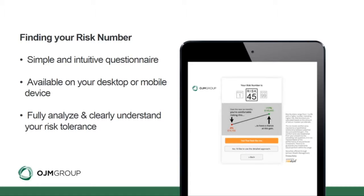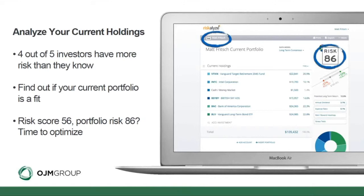We want to match your investments to your individualized risk number. On our 1-to-99 scale, we'll take you through a series of questions — typically about three to five minutes — available on your desktop or mobile device. What we have found is four out of five investors have more risk than they know. It's very typical that you'll look at a portfolio and your risk score would come back lower than the portfolio's risk. In this example, someone's personal risk score in the top left-hand corner is far lower than the portfolio risk of 86.